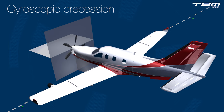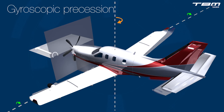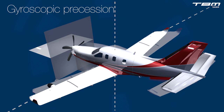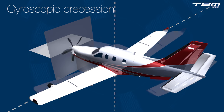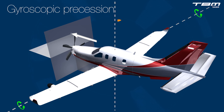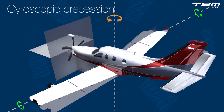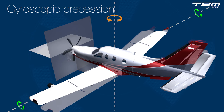Aggressive pitch-up transitions, as in a rapid rotation at takeoff, create a nose-right turning tendency — gyroscopic precession. The same is true with aggressive pitch-down transitions, as with a brisk stall recovery, but the turning tendency would be to the left. The effect is also more pronounced at low airspeeds.